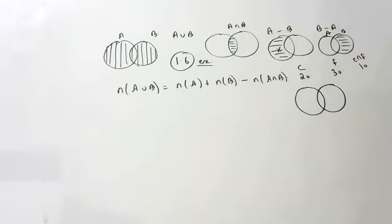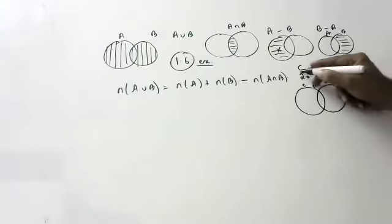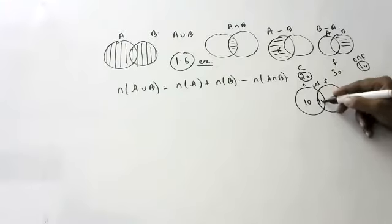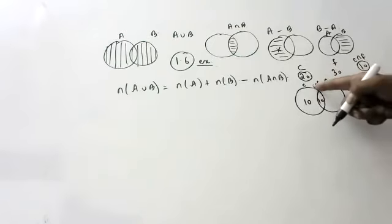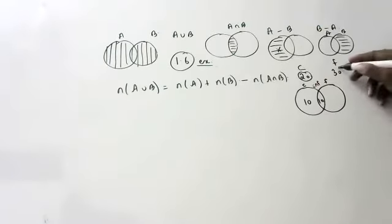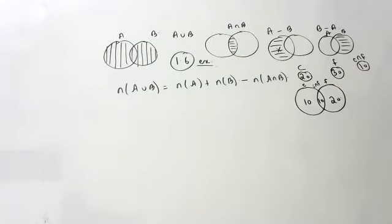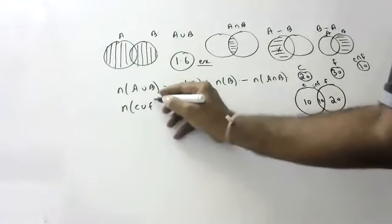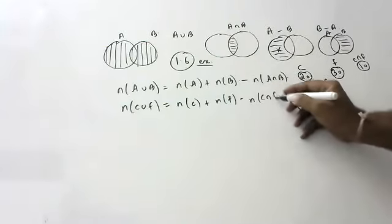Try to understand slowly. This is C (cricket), this is F (football), and this is C intersection F. This 20 will have people who love only cricket and also cricket-and-football. So here 10 and here 10 — 10 plus 10 is 20. The elements present in C are 20, and among them 10 are people who love both cricket and football.